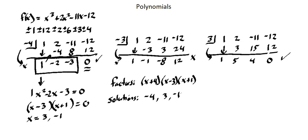Now we've fully factorized this cubic function and identified all solutions. The factors are x plus 4, x minus 3, and x plus 1, and the zeros are negative 4, 3, and negative 1.